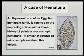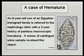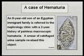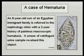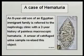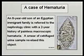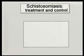Here is a case from the New England Journal of Medicine: an eight-year-old son of an Egyptian immigrant family was referred to the nephrology clinic with a two-year history of painless macroscopic hematuria. A smear of centrifuged urine revealed a characteristic egg. From the history, symptoms, and egg shape, one can readily deduce Schistosoma hematobium.